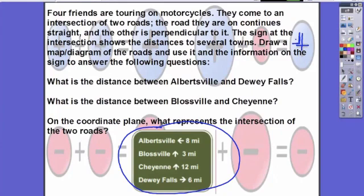We'll be looking at these three questions individually. First, what is the distance between Albertsville and Dewey Falls? Second, what is the distance between Blossville and Cheyenne? Third, on the coordinate plane what represents the intersection of the two roads?